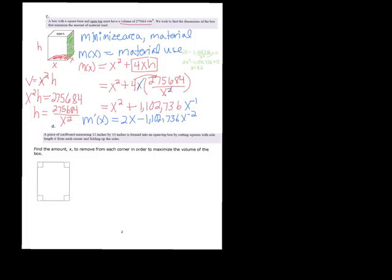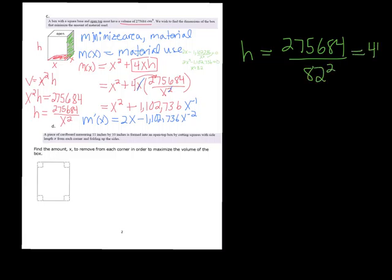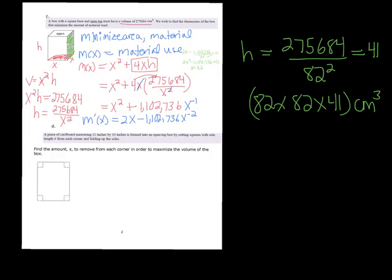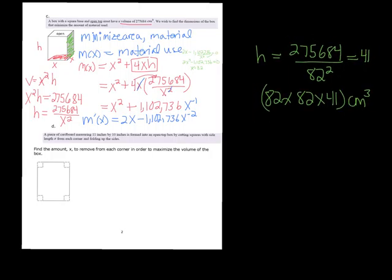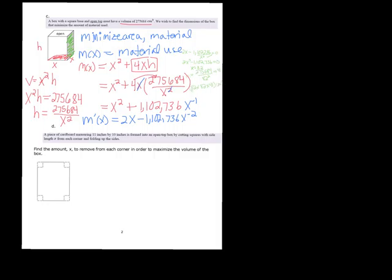x = 82 gives the two base dimensions. For height: h = 275684 / 82² = 41. So the dimensions that minimize material are 82 cm × 82 cm × 41 cm.